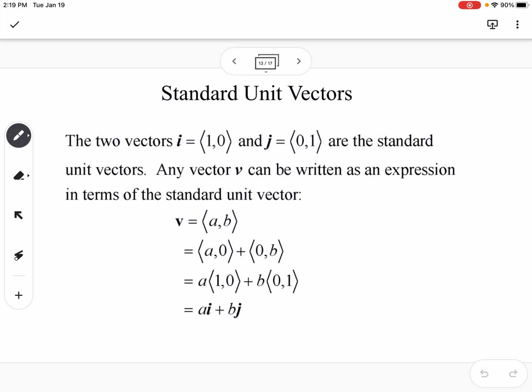Standard unit vectors: Another way other than component form to write it is with i and j. So if I have vector v that is (2, 3), I could also write this as 2i + 3j. That is a different way using our two standard unit vectors, which are i and j. Knowing that these two things mean the same thing, one is component form, one is standard form.